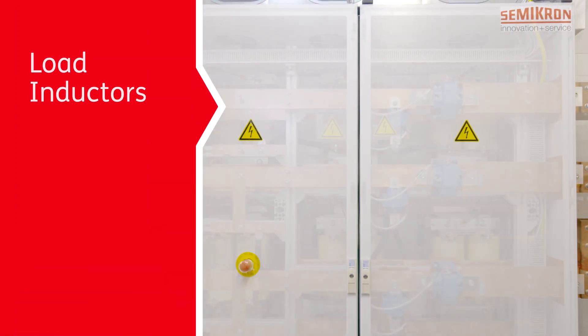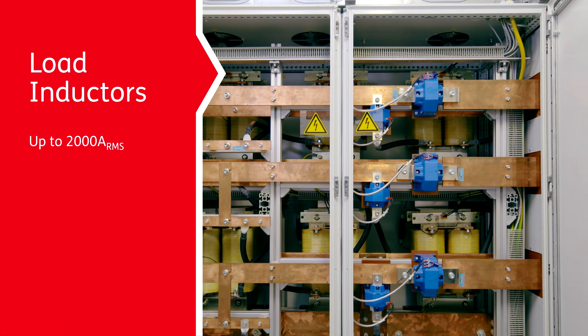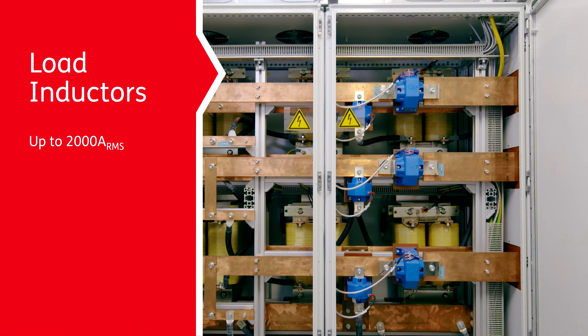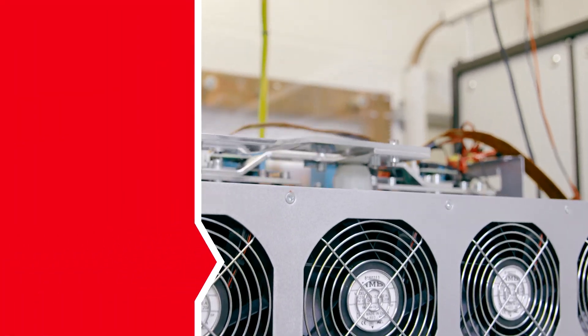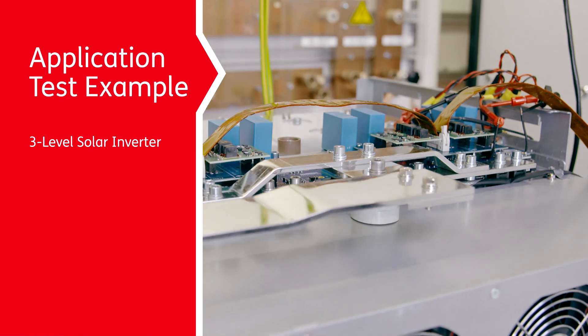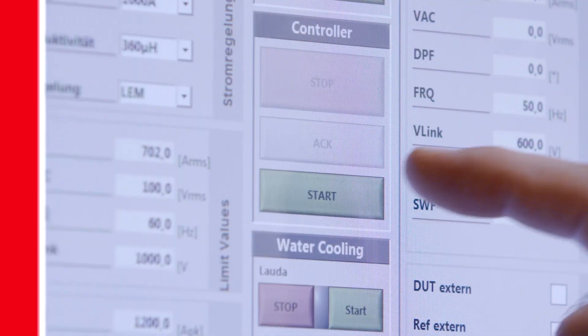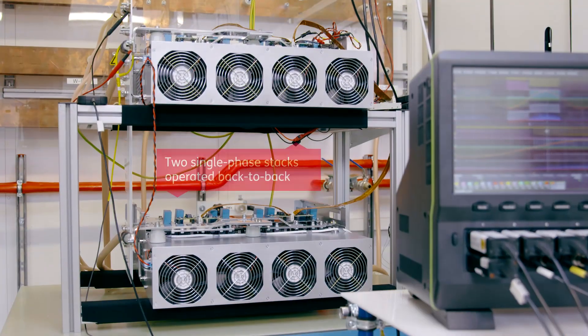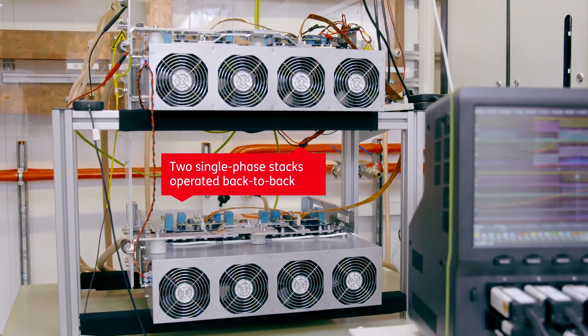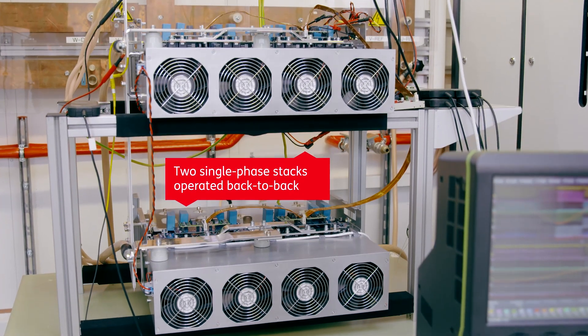The load inductors can handle up to 2000 amps of RMS current. Here, you can see one of our tests in action. The test inverter shown here is a three-level solar stack comprising four SEMIX-5 modules in parallel. The test setup is two single-phase stacks operating back-to-back.